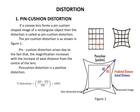Here, this is the rectangular object and this is the image. This image is not like a square, but it is like a pincushion. Hence, the defect is said to be pincushion distortion. This pincushion distortion arises due to the fact that the magnification increases with the increase of axial distance from the center of the lens. So, as the axial distance increases, this distortion increases.